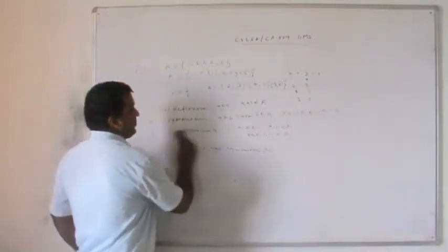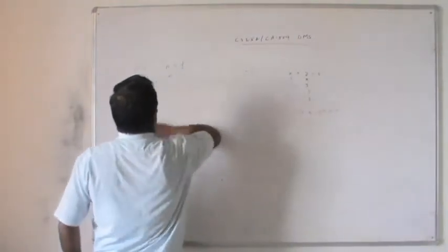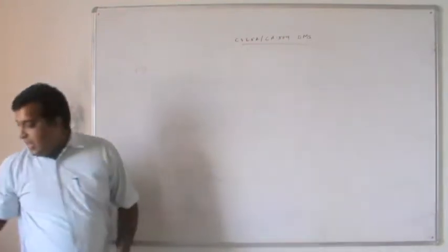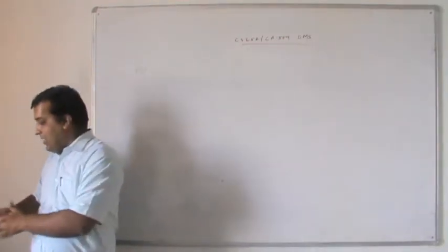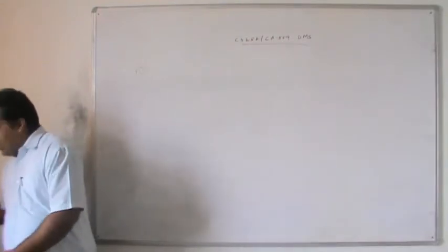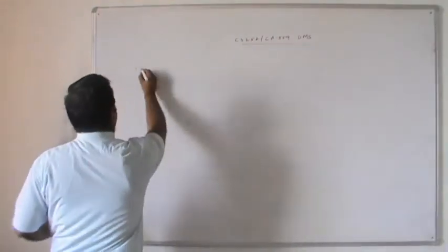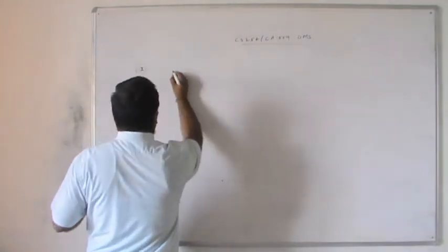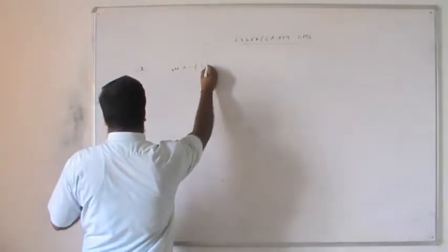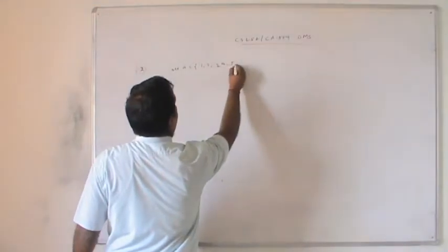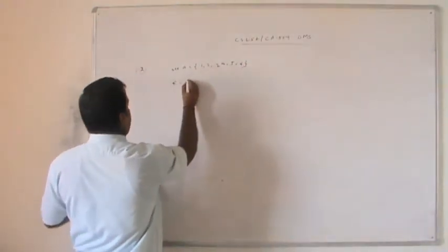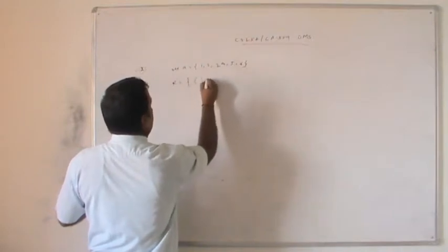The next problem: Given set A = {1, 2, 3, 4, 5, 6} and the relation R = {(1,1), (1,5), (2,2), (2,3), (2,6), (3,2), (3,3), (3,6), (4,4), (5,1), (5,5), (6,2), (6,3), (6,6)}, find the partition induced by R (i.e., the equivalence classes of R).